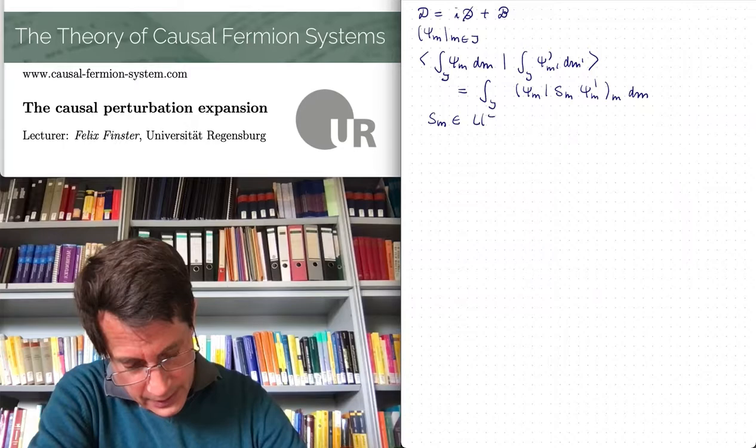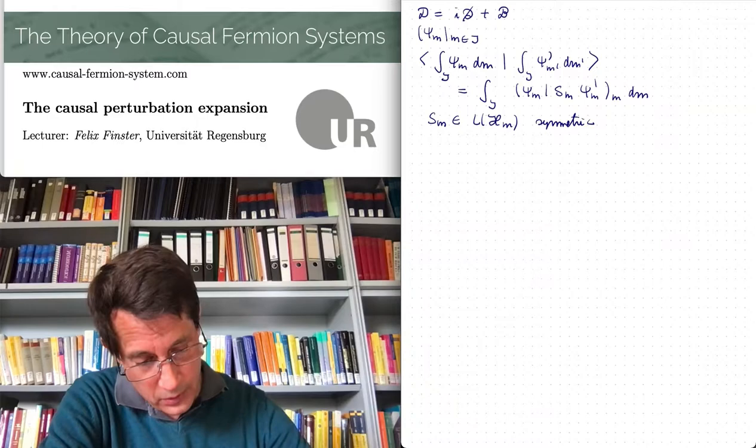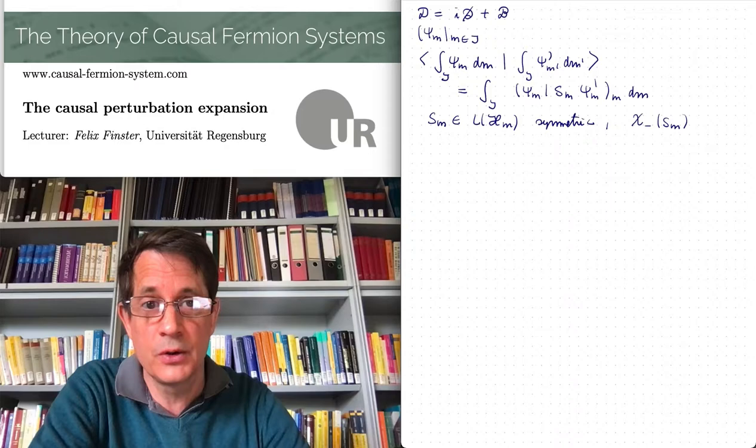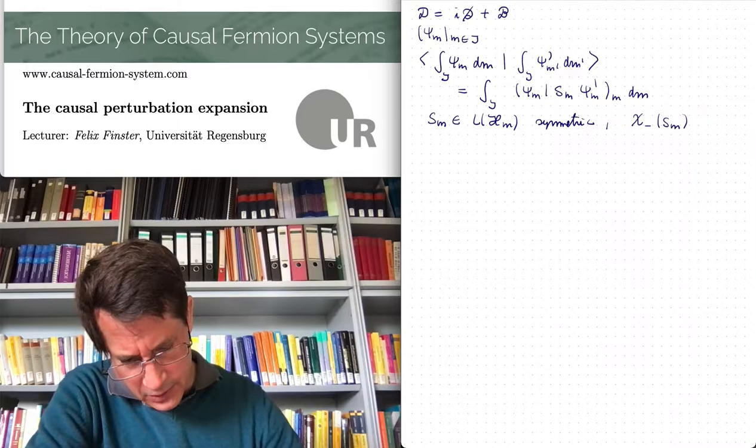The right side can be used to define the fermionic signature operator. This was a bounded operator on the solution space, symmetric, which means that we have the spectral calculus at our disposal — in particular, one can introduce the negative spectral subspace and the projection operator onto the negative spectral subspace of the fermionic signature operator. This made it possible to construct the kernel of the fermionic projector.